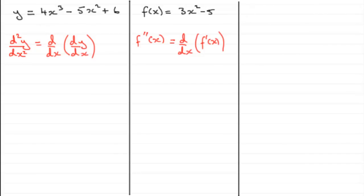Okay, so for this one here, if we've got y = 4x³ - 5x² + 6, first of all, in order to get d²y/dx² we need to differentiate this with respect to x.